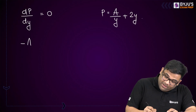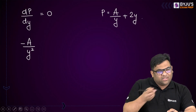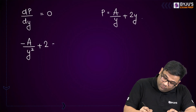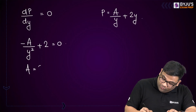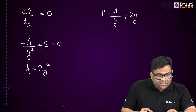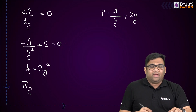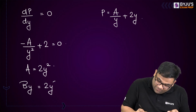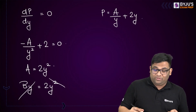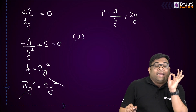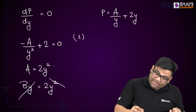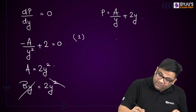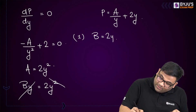Differentiating: dp/dy = −A/y² + 2 = 0, so A = 2y². Since for a rectangular cross section area = b × y, we get b × y = 2y². The first conclusion for a rectangular efficient section is that width b = 2y.